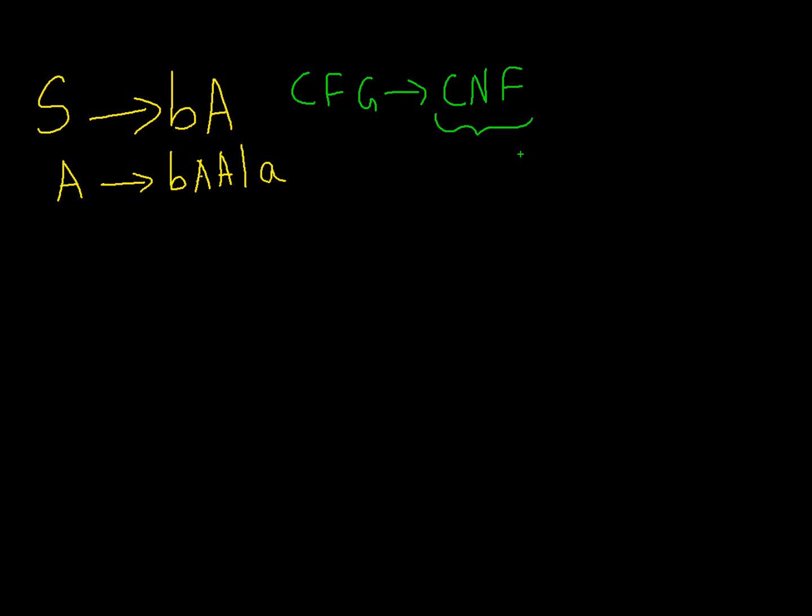Now in Chomsky normal form, productions are of this type: a symbol produces a terminal, or a symbol produces two symbols.